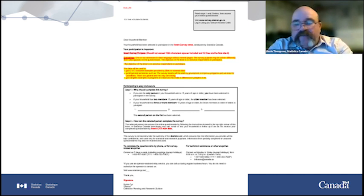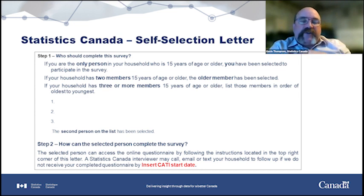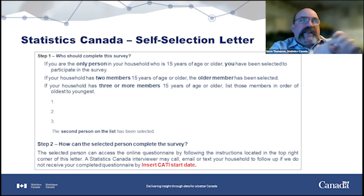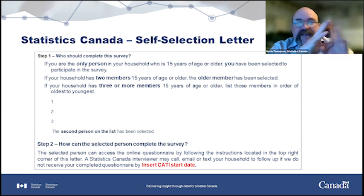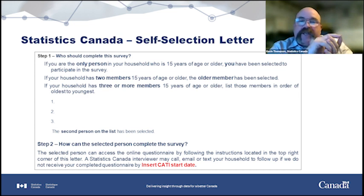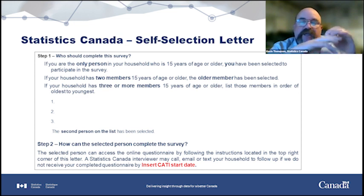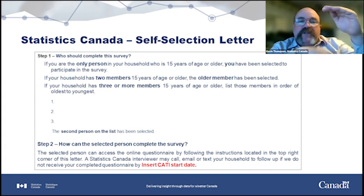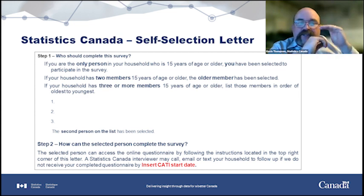These are letters we send to respondents when the first contact is by mail. This is the self-selection letter. For the labor force survey, the first stage of sampling is clusters — a geographical area or neighborhood. We sample a neighborhood, and then in the second stage we need detailed lists of all dwellings in those selected areas. From there we select households. For this specific survey, you need to select a respondent inside the household. So the primary sampling unit is the cluster, the secondary is the dwelling, and the tertiary is the person.